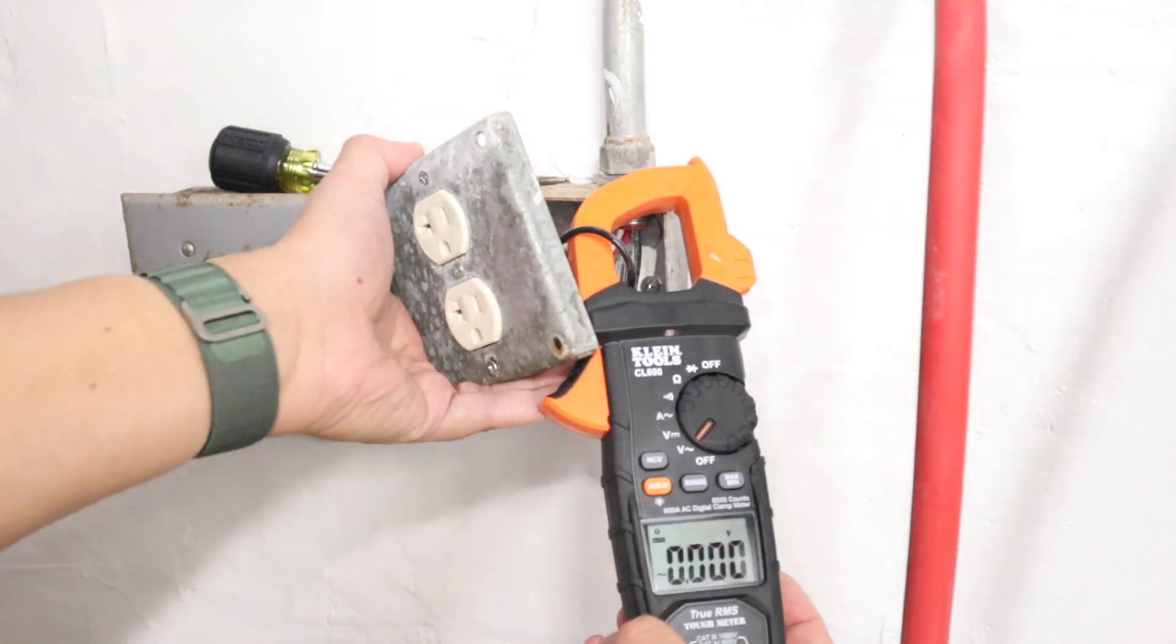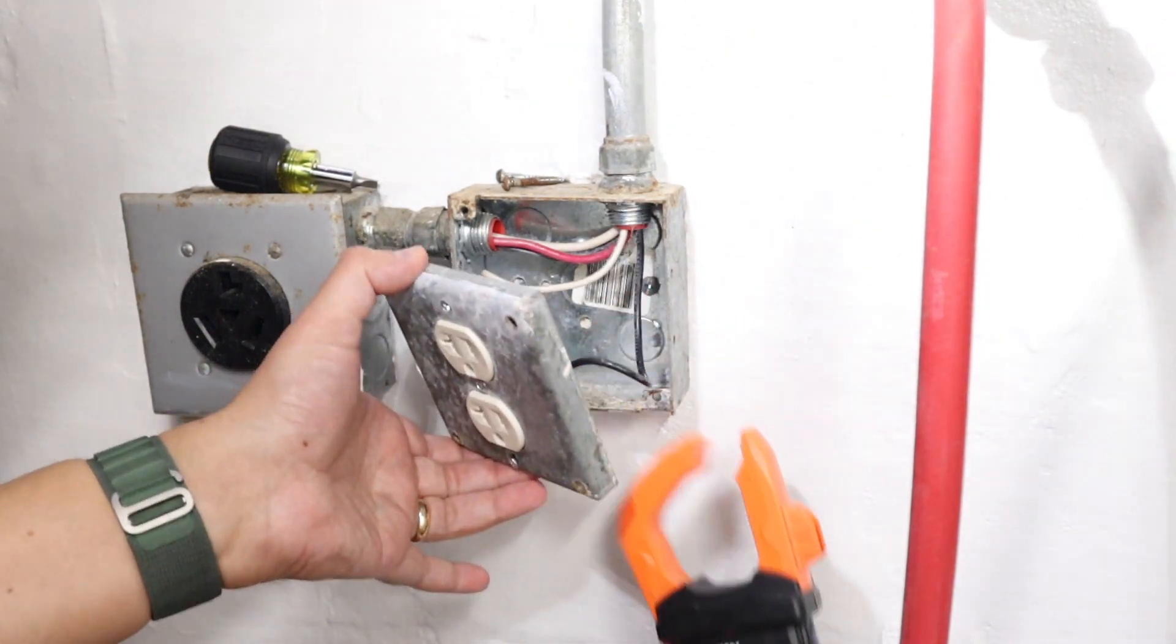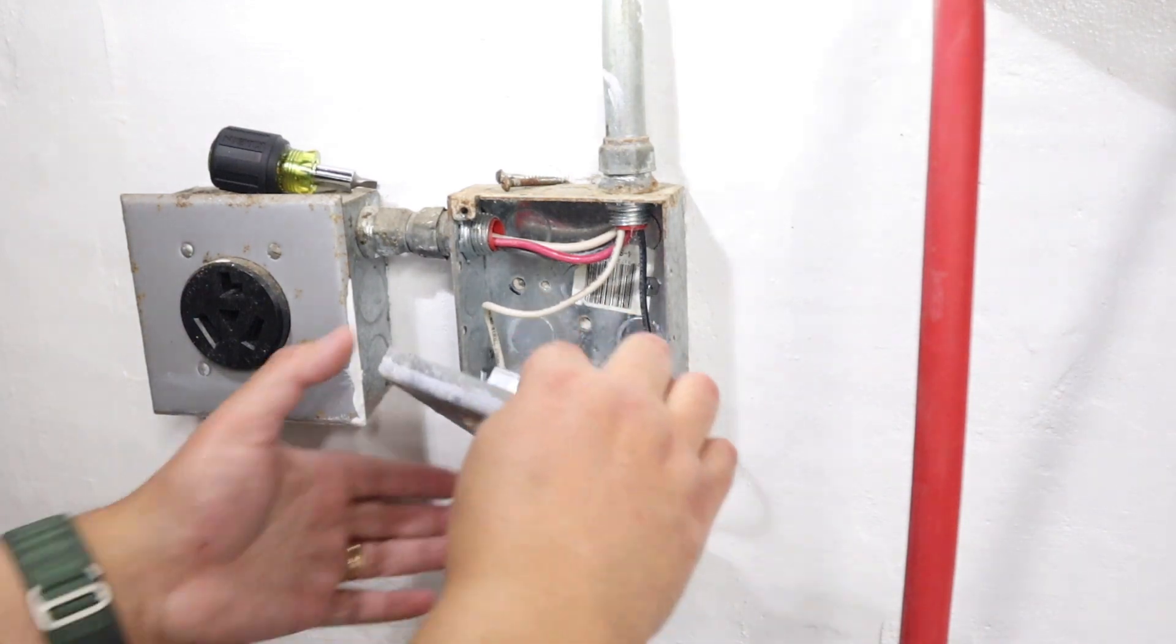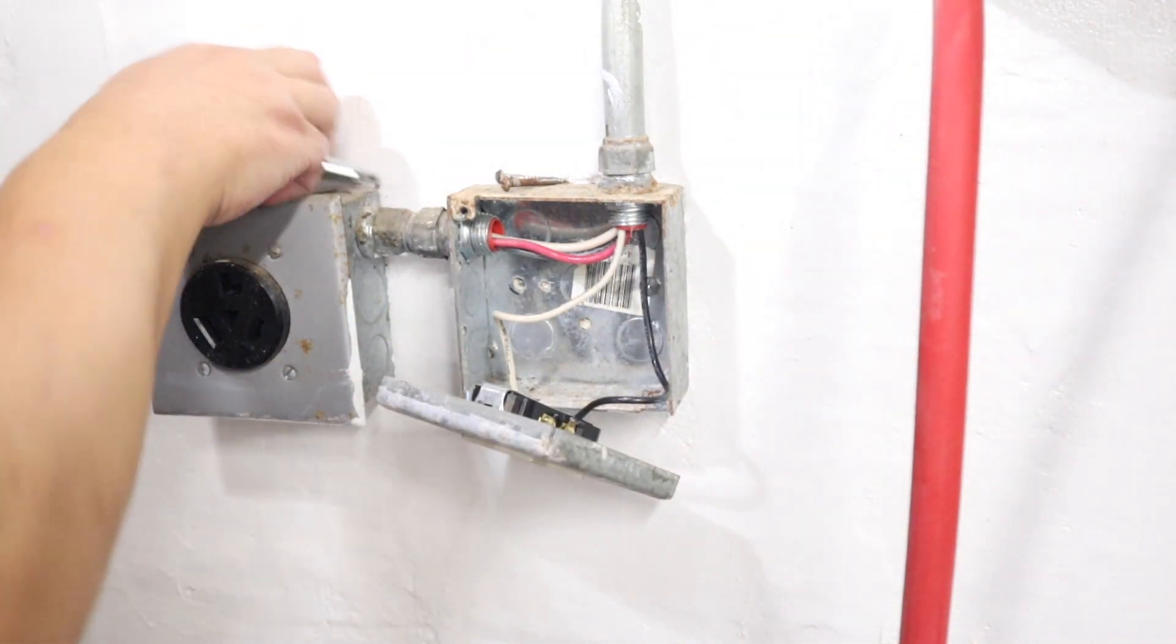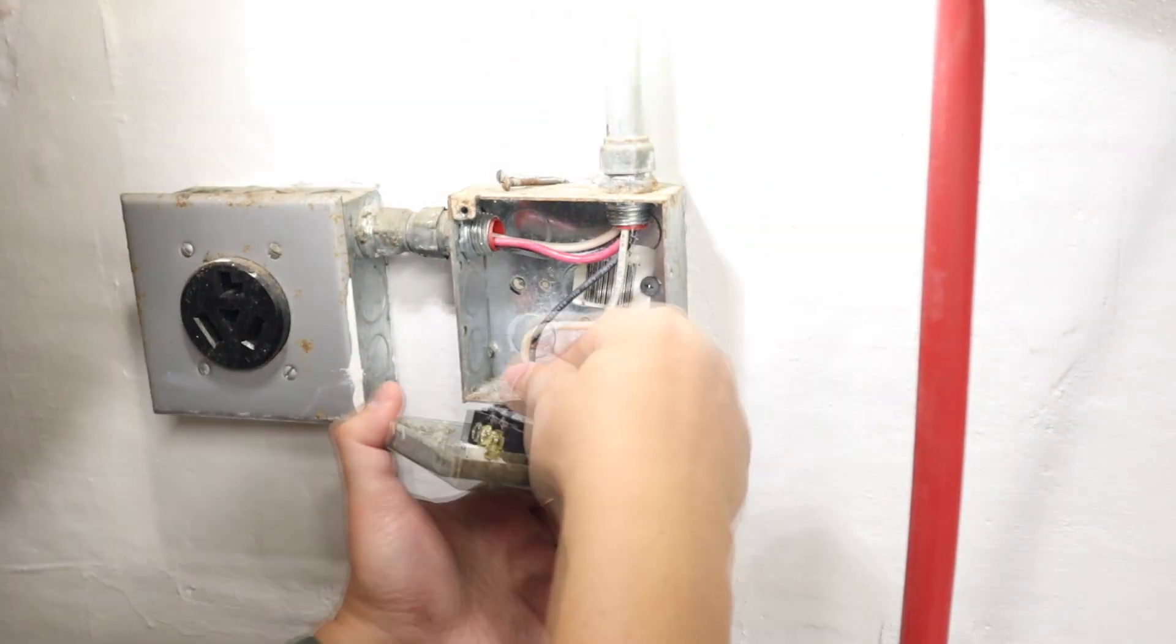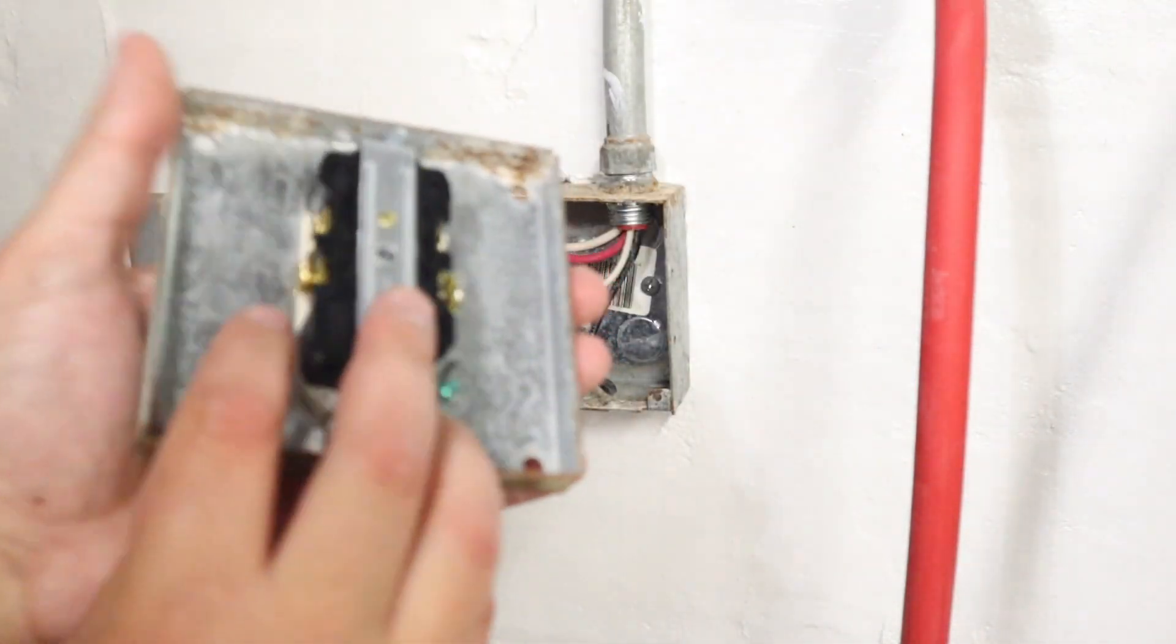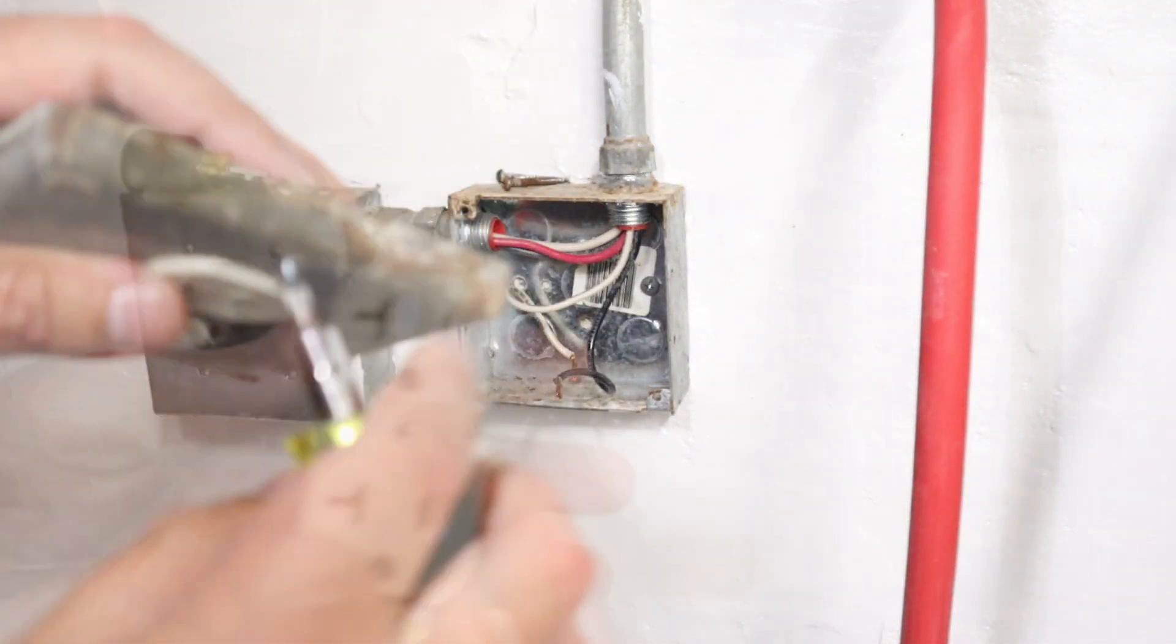And it says 0.0, so now that I know there's no power to this, I'm going to go ahead and take my clamp meter off. Let's see what we're working with. First thing I'm going to do is take off this old outlet.